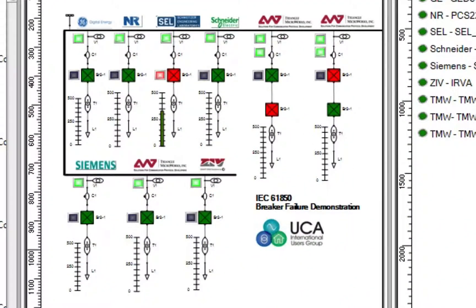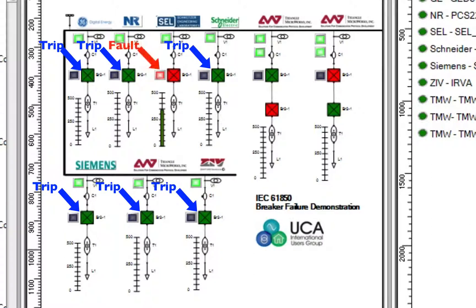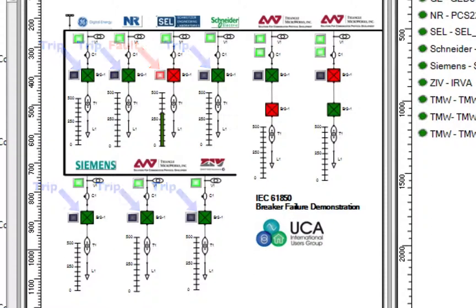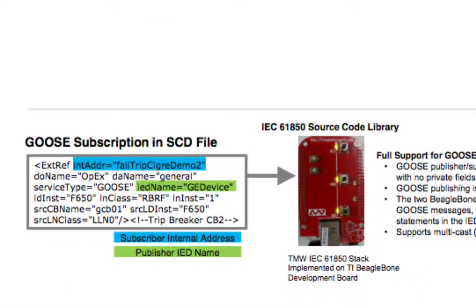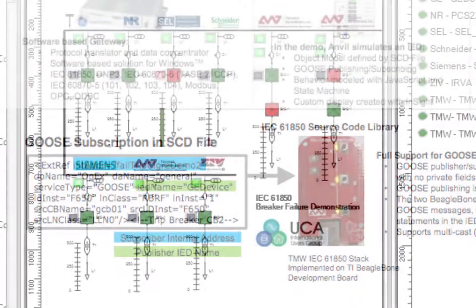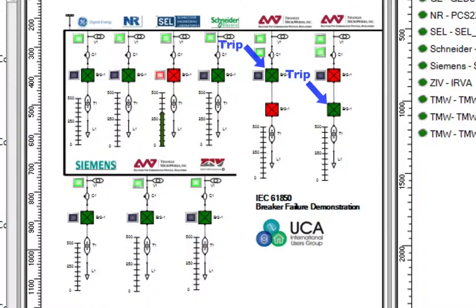Looking at the single line diagram, which shows the IEC-61850 data received by the client, we see that it is updated to show that each of the simulated breakers has tripped, except for the Schweitzer relay, which is showing a fault. Remember that the two BeagleBone boards in this demo subscribe to the same RBRF.opEx Goose messages, but use different in-adder assignments in the Xtref statements in the IED section of the SCD file to trip different breakers. As expected, the single line diagram shows that one breaker on each BeagleBone has tripped, and that they tripped different breakers.